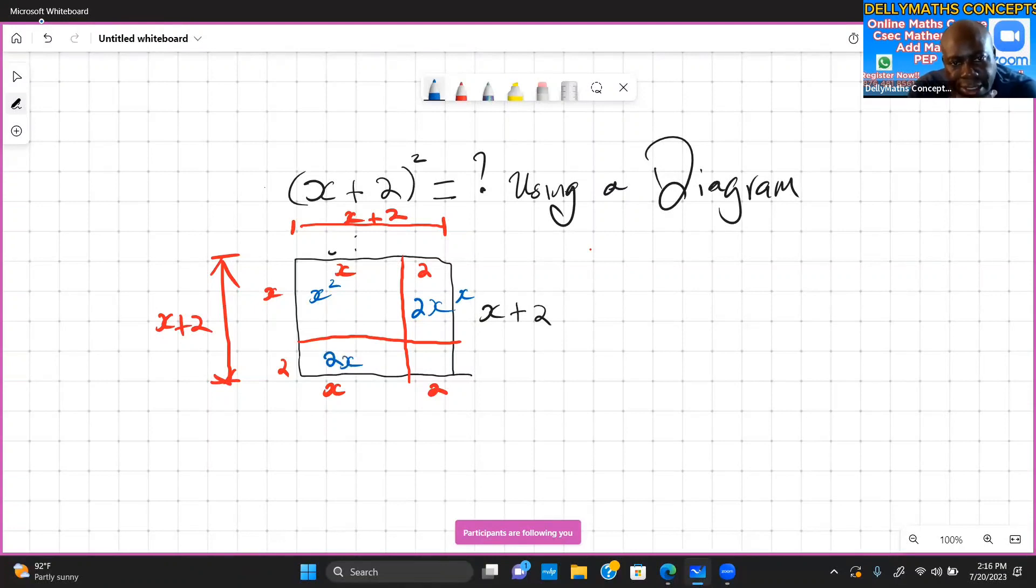Remember that this piece is 2. This is 2. So what is the area of this? 4. 2 times 2 gives us 4.